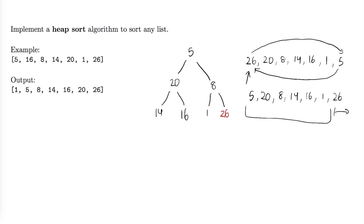Now we just have to heapify this heap without considering any elements in red since they're already sorted. We're going to move 5 down in this direction because 20 is greater than 8 and both are greater than 5. We'll move 5 here and swap with 20, then move 5 once again to where 16 is. Now 5 is all the way at the bottom. So our next element at the top is 20, and we're going to pull that out next and swap it with the last element — keep in mind the last element we're considering is 1, not 26.